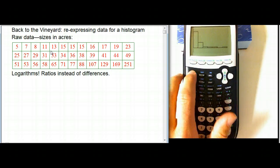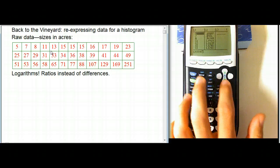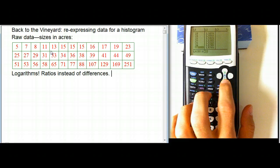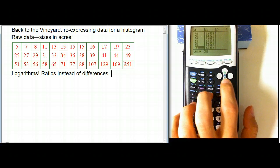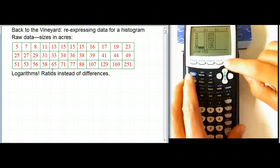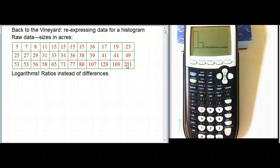You would go to stat and edit and then enter it into L1. And so you can see in this L1, I've got this list of data, 36 entries of all these numbers here. And then that's what I use to make this histogram. Well how do you re-express the data? It's pretty easy.